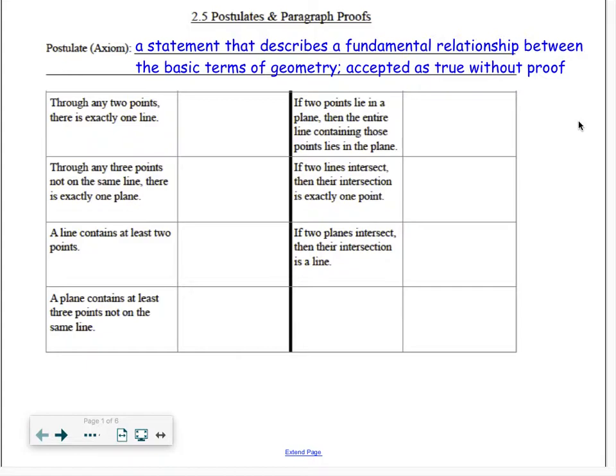A postulate, or an axiom, is a statement in geometry that describes a very basic relationship between geometric terms. Postulates are ideas that are considered to be so fundamental, so basic, that they actually do not have to be proven. These are the building blocks for which everything else in geometry comes from.